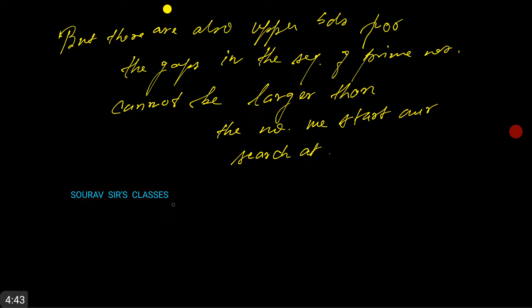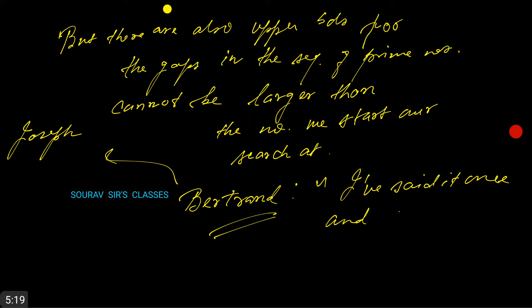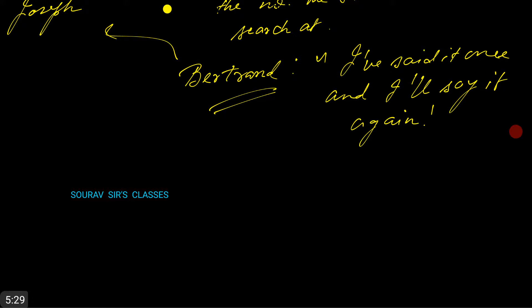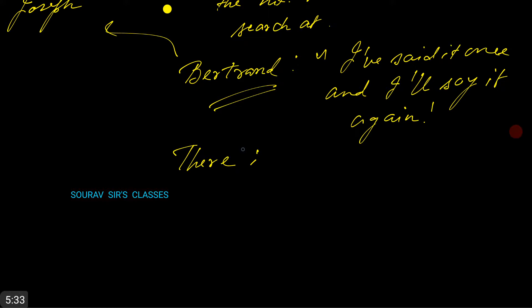Joseph Bertrand (not Bertrand Russell, my apologies for the confusion) conjectured that there is always a prime between n and 2n.